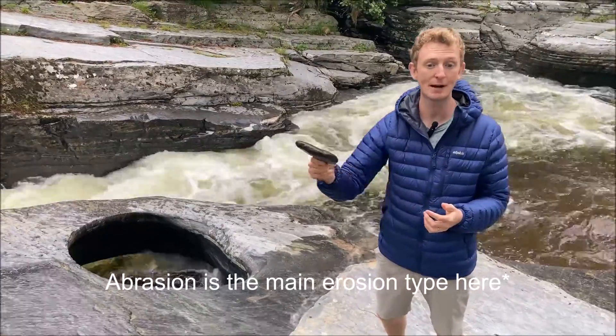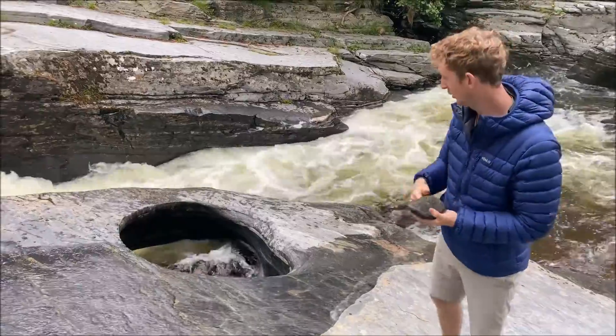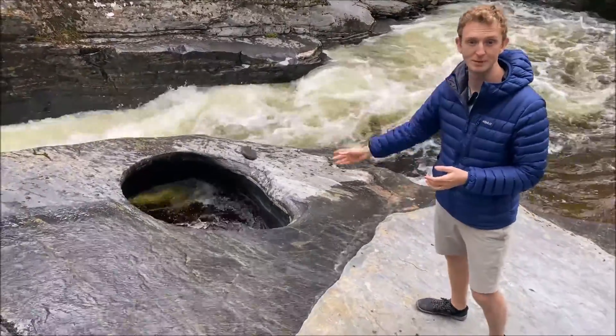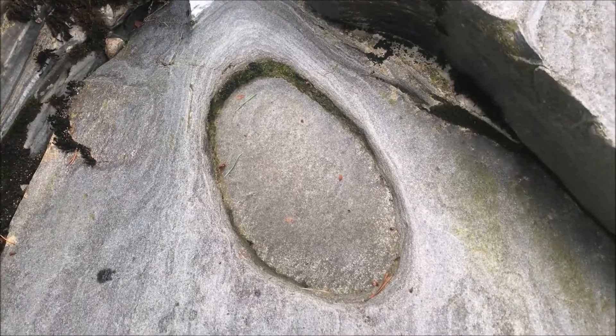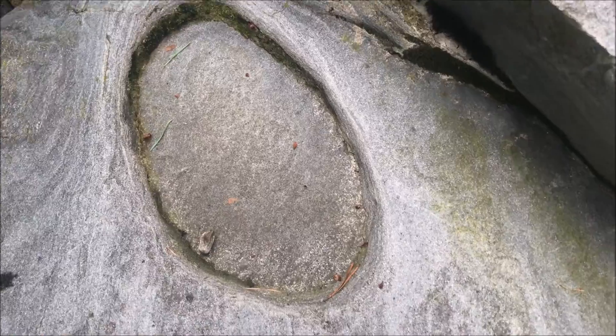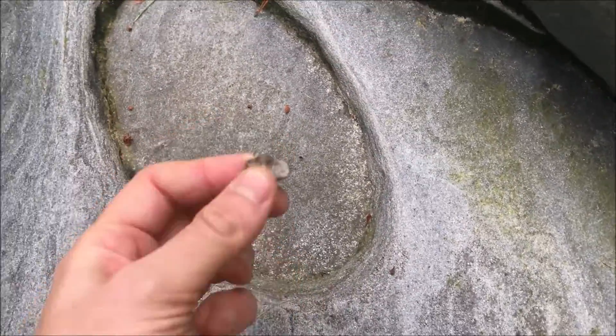As that continues, bigger rocks will move into the river, one such as this, and again move around in a circular motion, drilling deeper and wider until we get something quite dramatic like this pothole in front of me. This is an example of a small depression in the riverbed, in the bedrock, and it's only the beginning of a pothole.